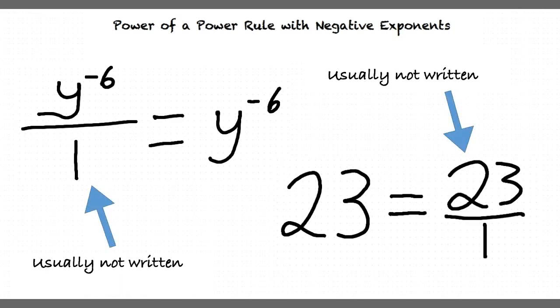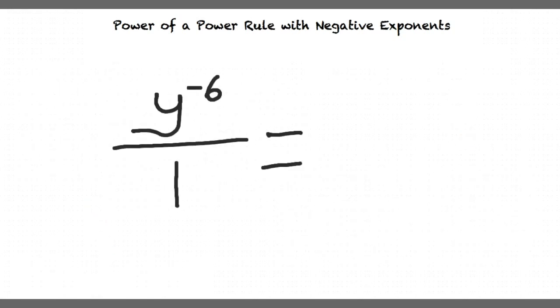However, if we are simplifying a term with a negative exponent, we need to remember that it is actually in the numerator of a fraction. So, to simplify, we move that term to the denominator and change the sign of the exponent.